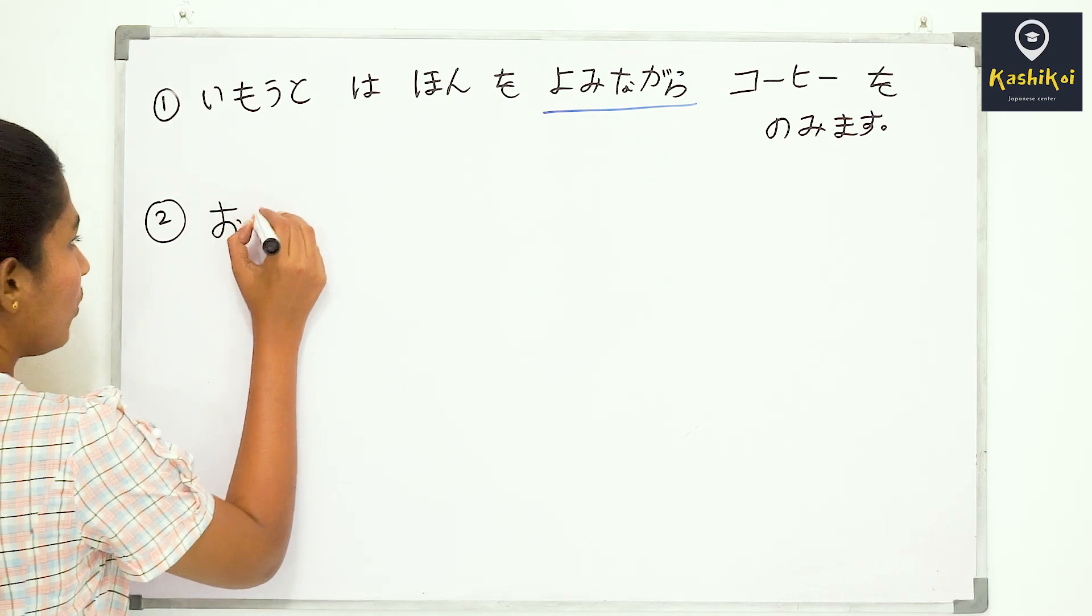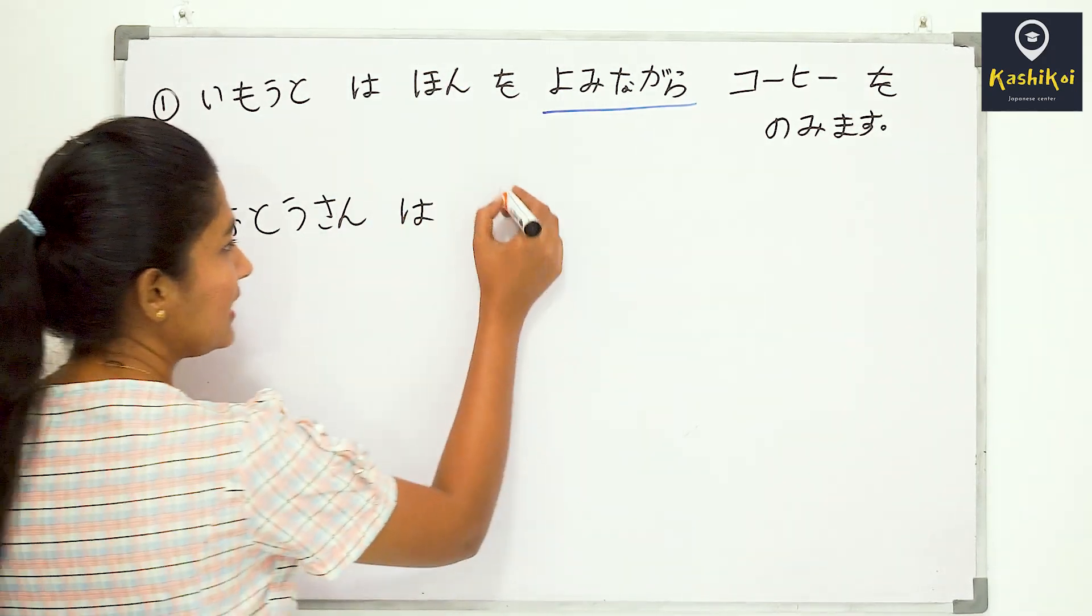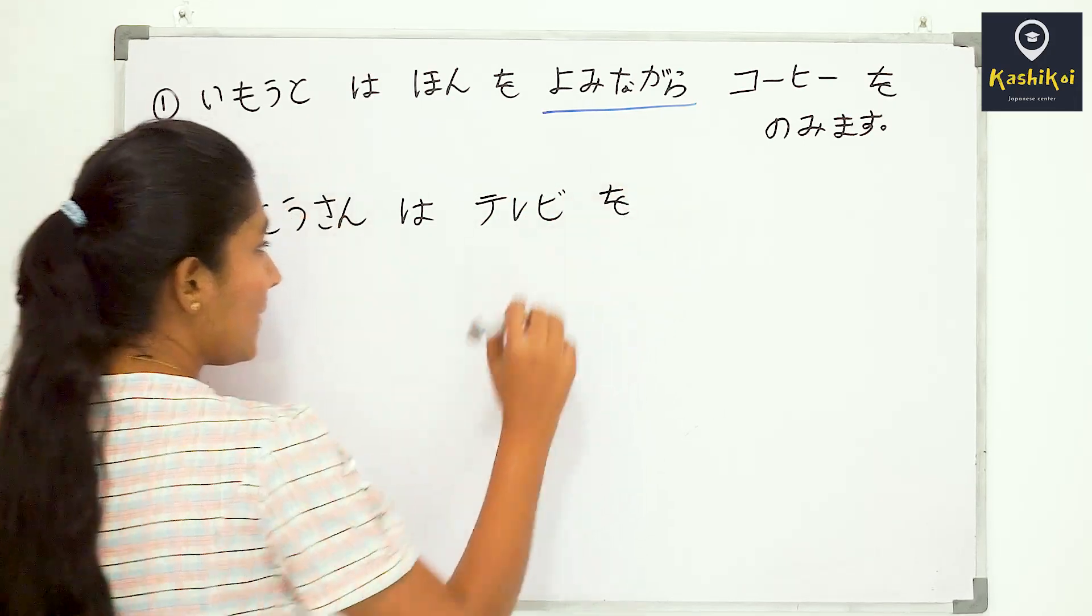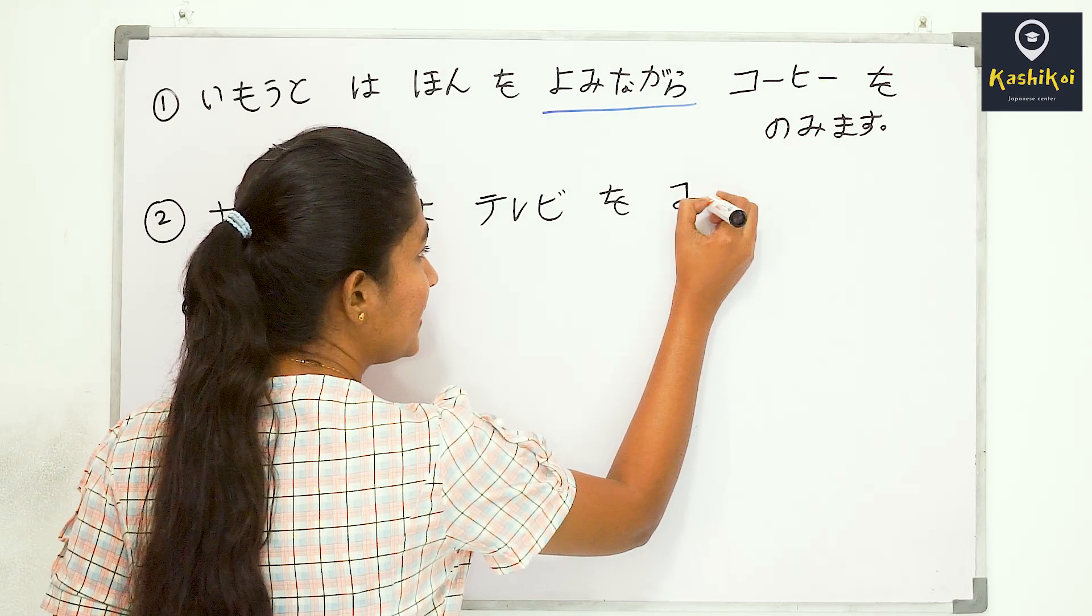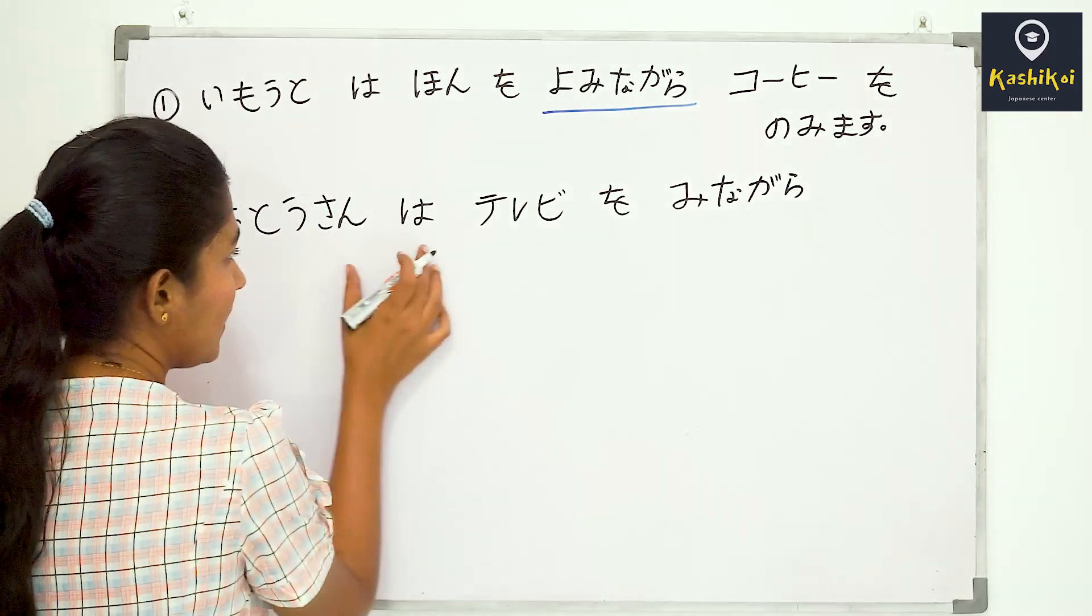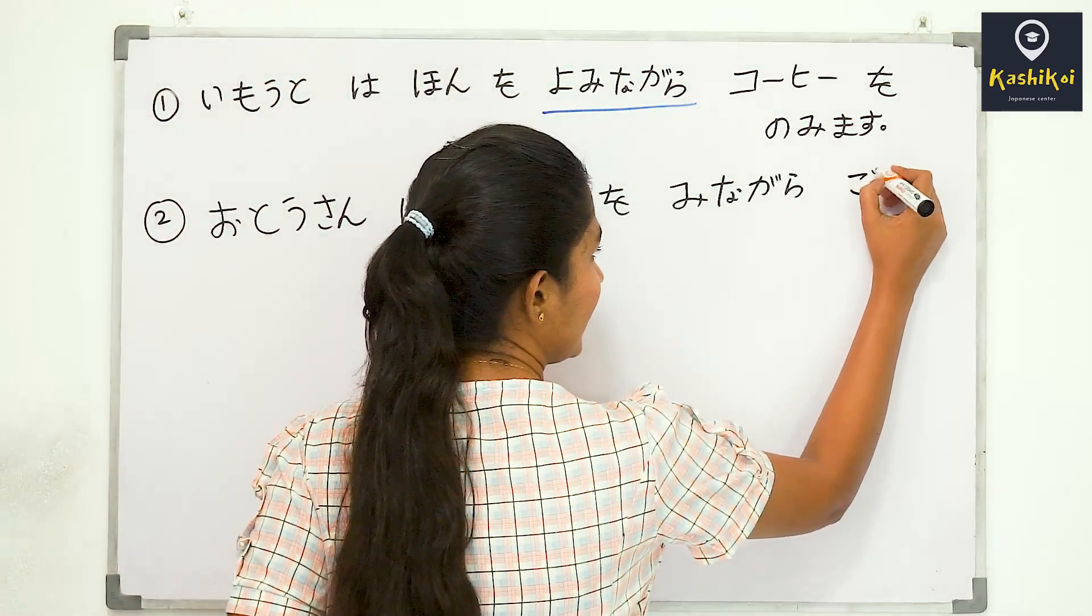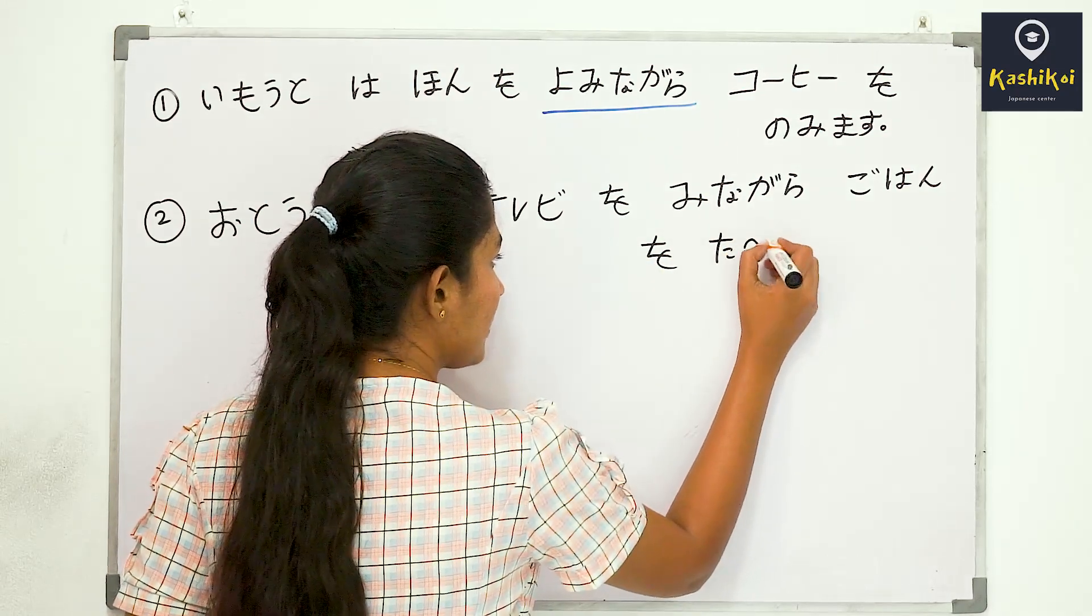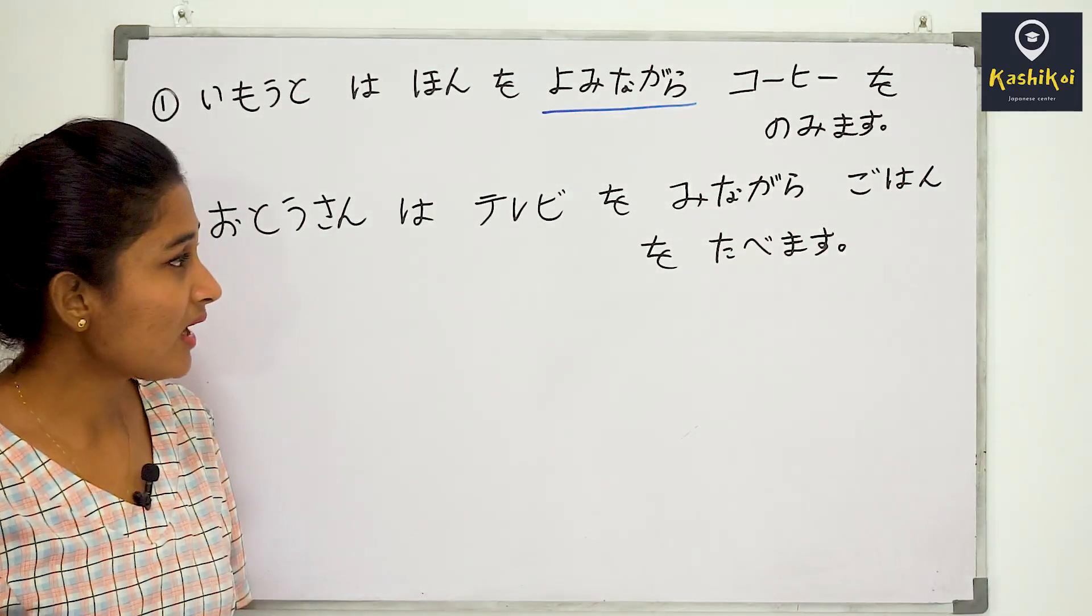Another example: Otosan wa terebi o mi nagara gohan o tabemasu. This means 'father eats while watching TV.' Mi nagara comes from miru (to see/watch), and it shows he's watching TV and eating at the same time.